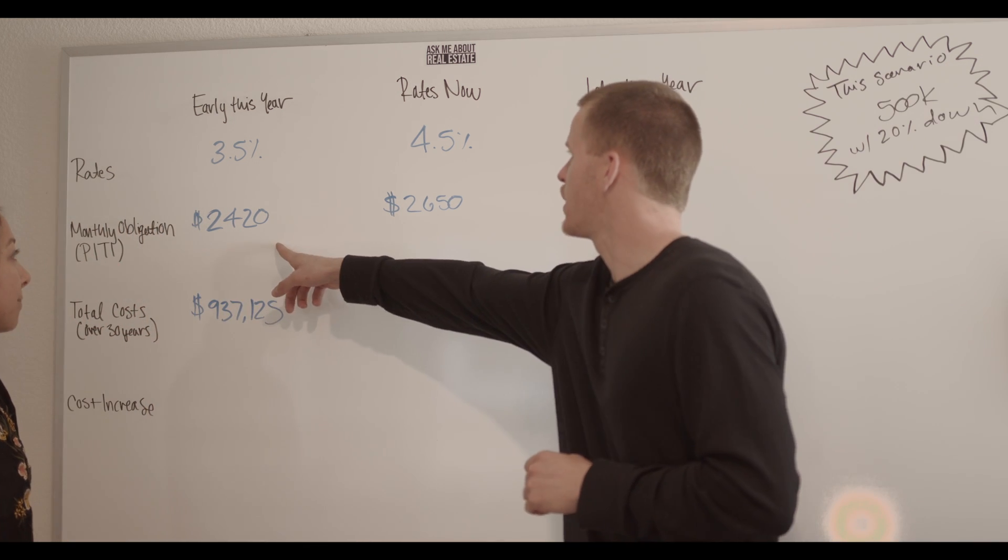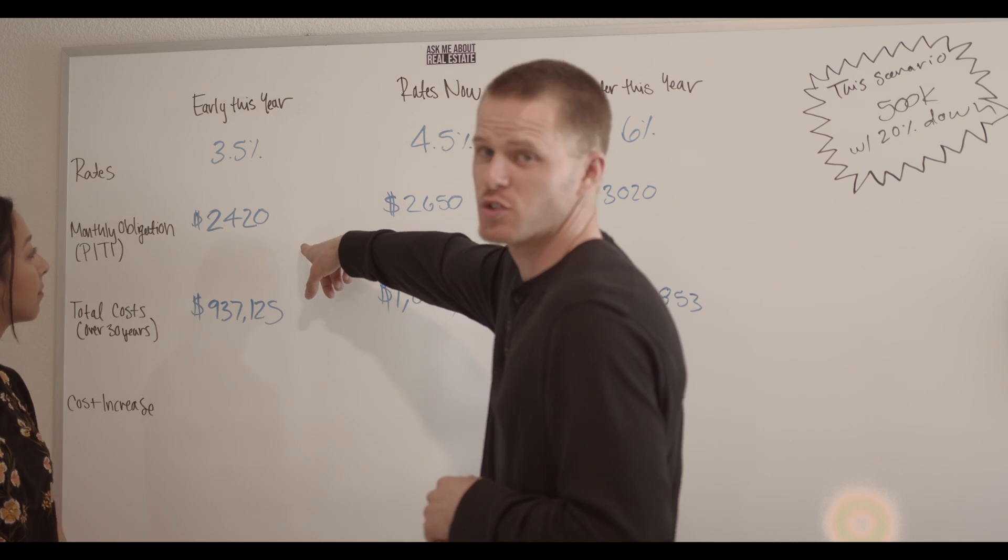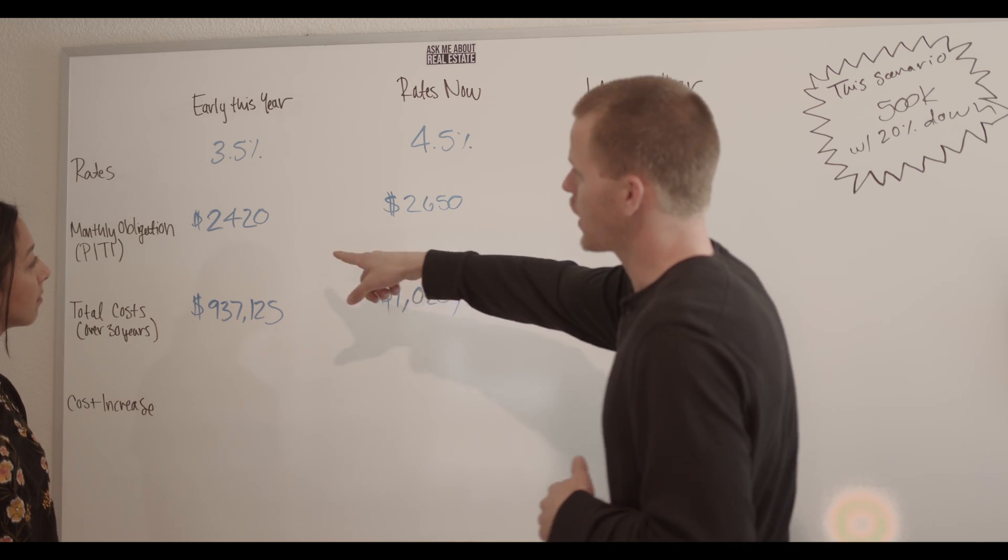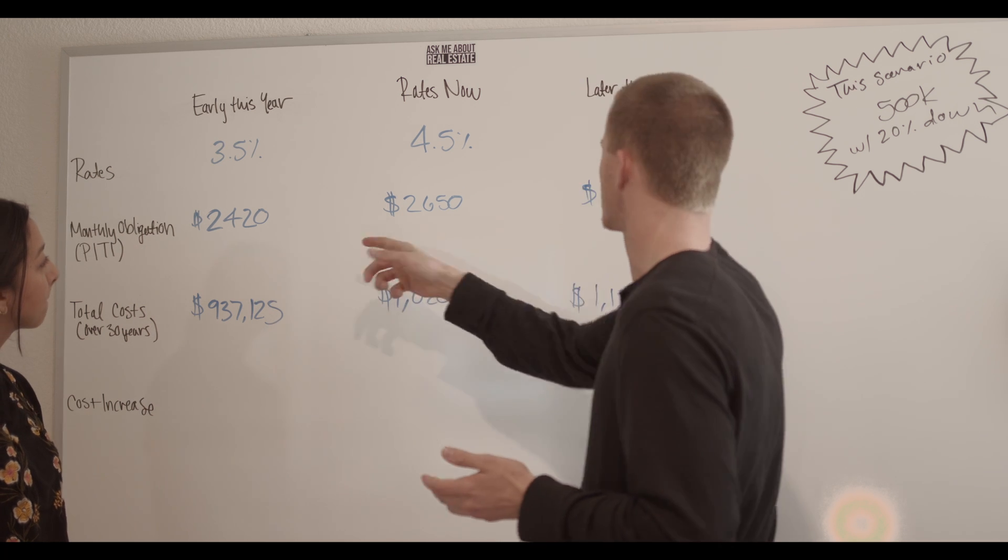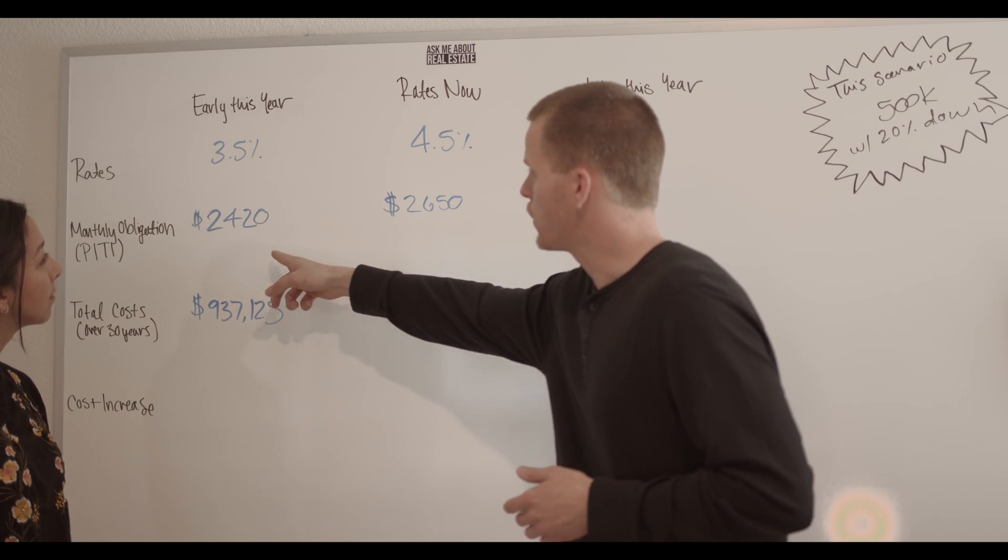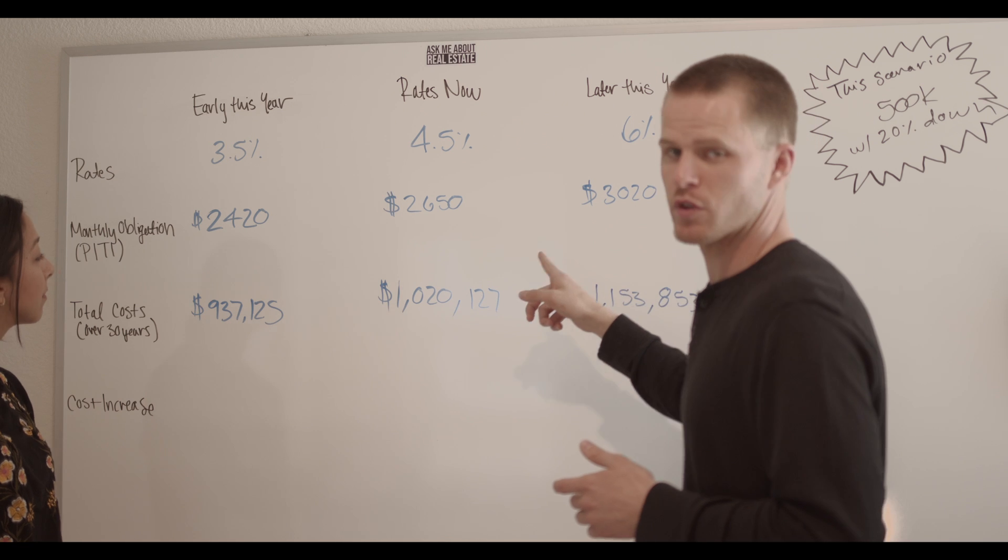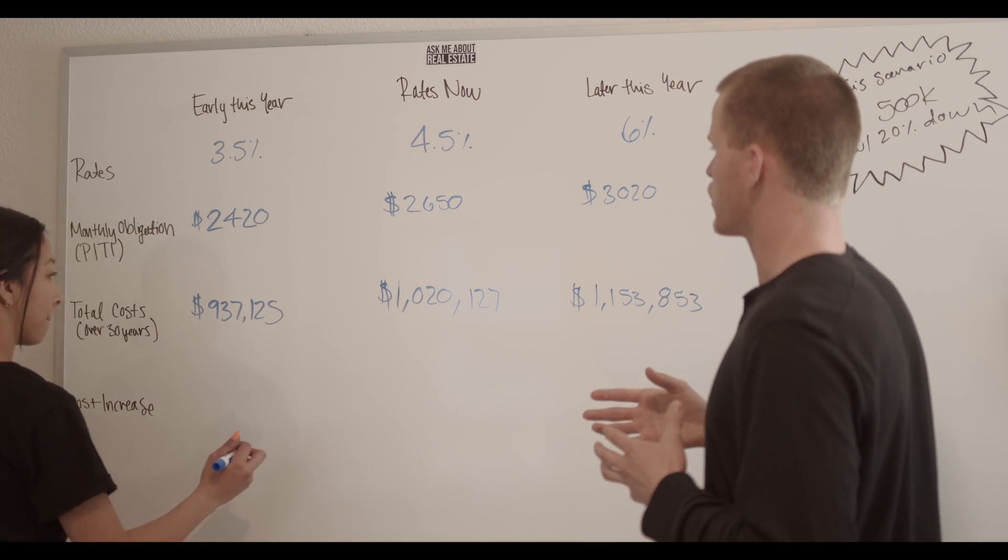It could seem like it's not too much of a difference, right? From a 3.5% interest rate on your mortgage to 6%, you're probably paying about $600 more between the two. But over the longevity of the years, over the 30-year term...